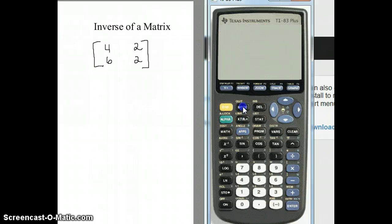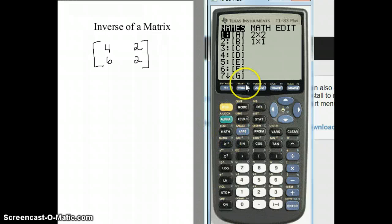So I'm going to quit to get out of this screen. And to do an inverse, you want to first put the matrix name. So second matrix, and I'm going to select number one. That's where I entered my matrix in A.